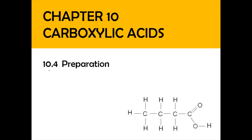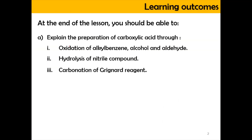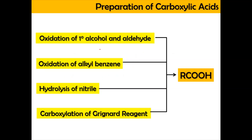Hi, Assalamualaikum and a very good morning. We are in Chapter 10 which is carboxylic acid, and we're going to focus on sub-topic 10.4 which is the preparation. In this video you're going to look into the preparation of carboxylic acid through the oxidation of alkyl benzene, alcohol, and aldehyde. You're also going to look into the hydrolysis of natural compounds, and lastly the carboxylation of Grignard reagent in order to produce carboxylic acid.